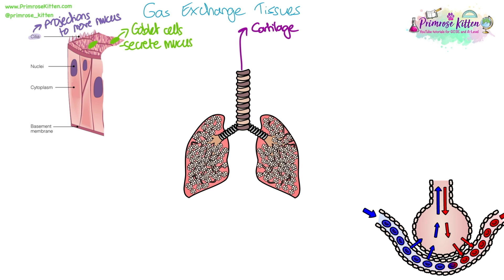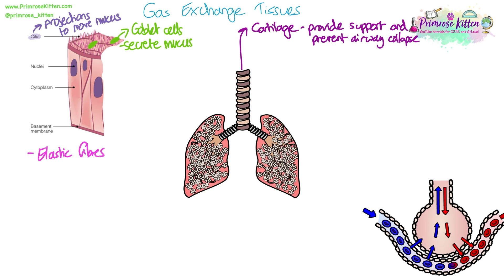Cartilage is another tissue in the exchange system. It provides support and prevents the airways collapsing — it is strong but also flexible. Elastic tissue is needed so that the lungs can expand when they fill with air, and the elastic nature of the tissue allows it to recoil, which helps to force air back out during exhalation.